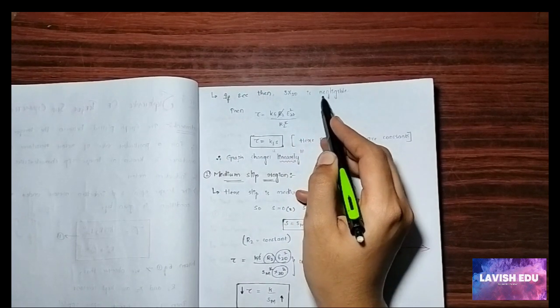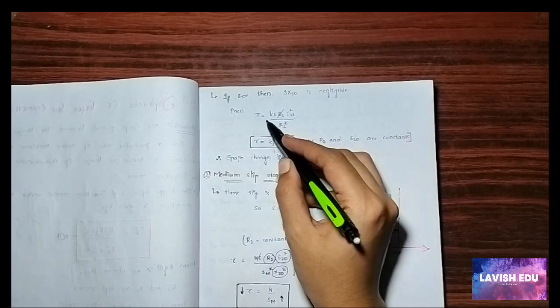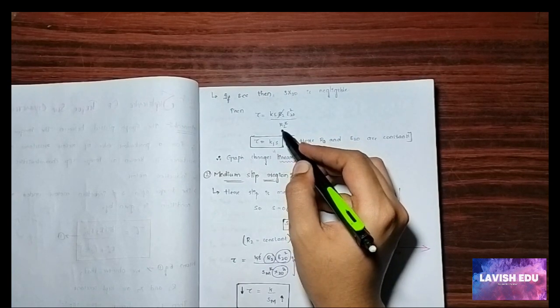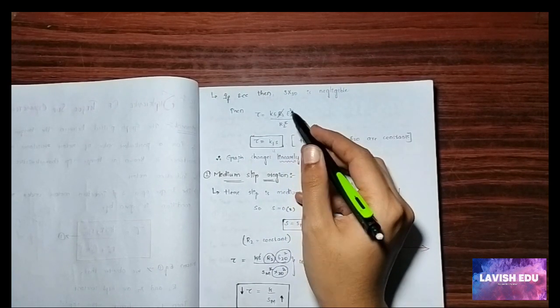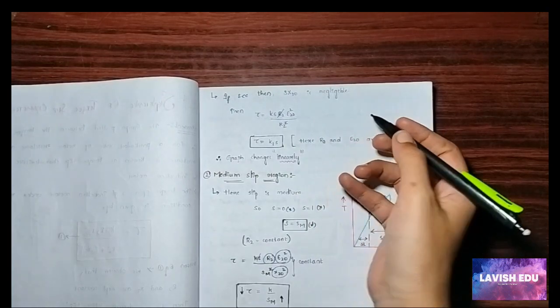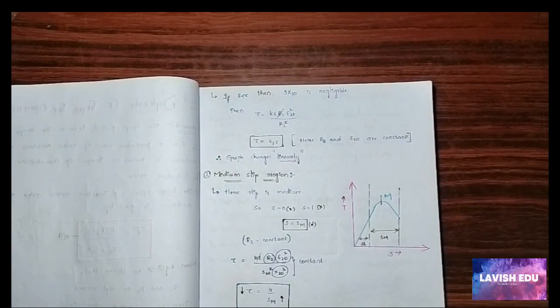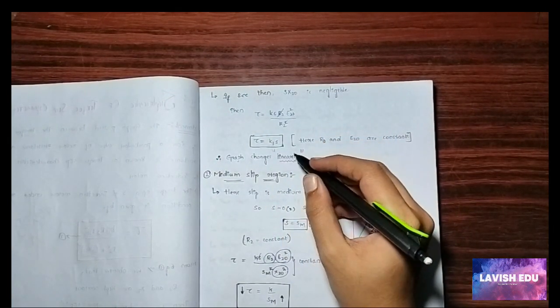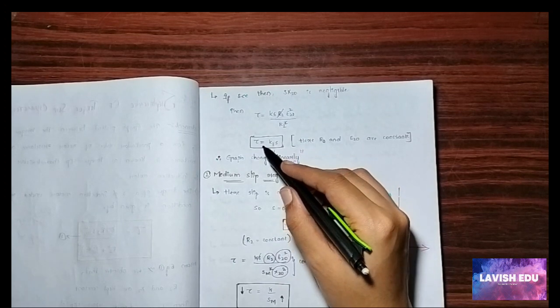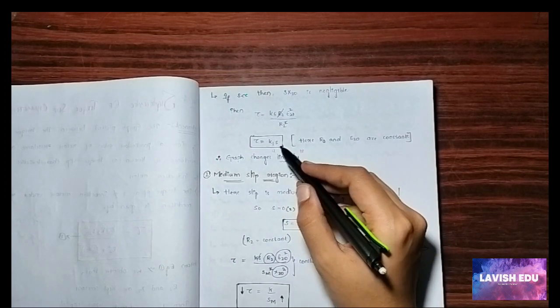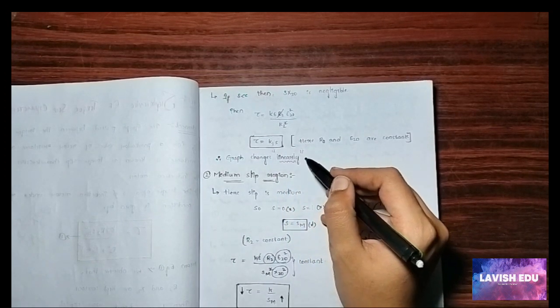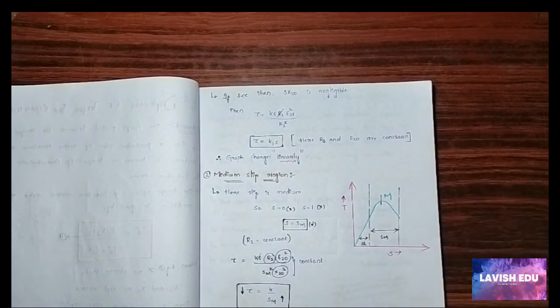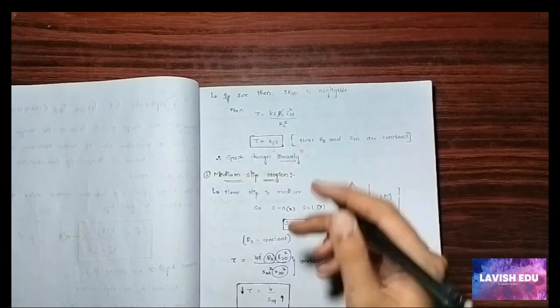So s·X20 is to be neglected. By substituting this formula we get R2/R2 cancels, and as we have said that R2 and E20 are constant in this torque-slip characteristic, torque depends on the slip. So a linear graph is plotted between the torque and the slip where K is a constant value.